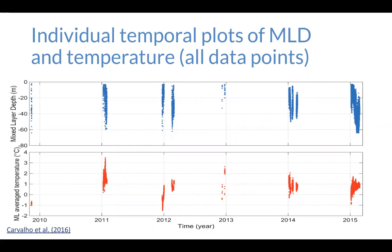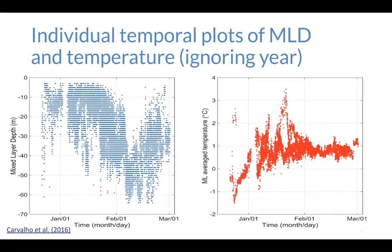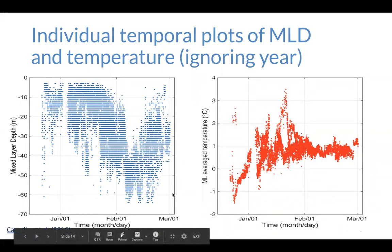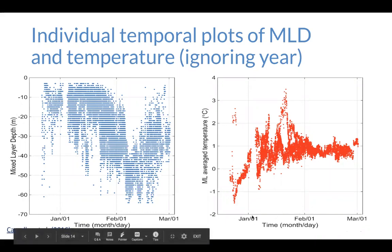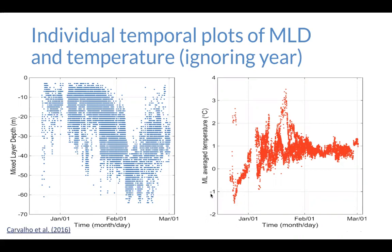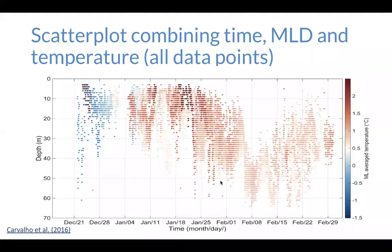She was curious about what was going on in the summer, so she removed the year because it didn't matter what year the data had been collected. Now she had, across January, February, and March regardless of year, where the mixed layer depth was as well as what the temperature was at those mixed layer depths. She could start to see some patterns, but what she was really curious about was where the mixed layer depth, the average temperature, and the time throughout the summer months intersect — remembering Antarctica is in the southern hemisphere, so their summer is January, February, March.